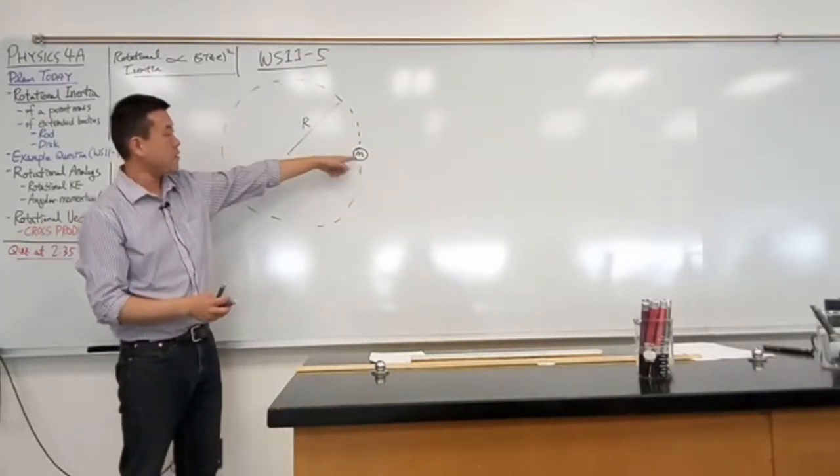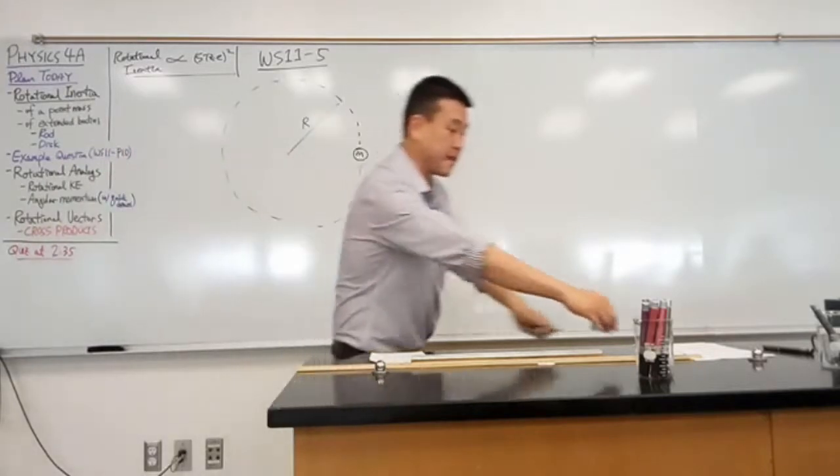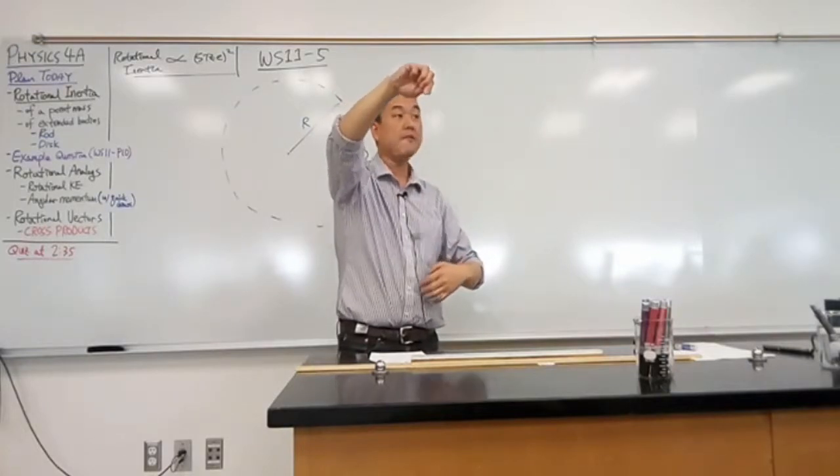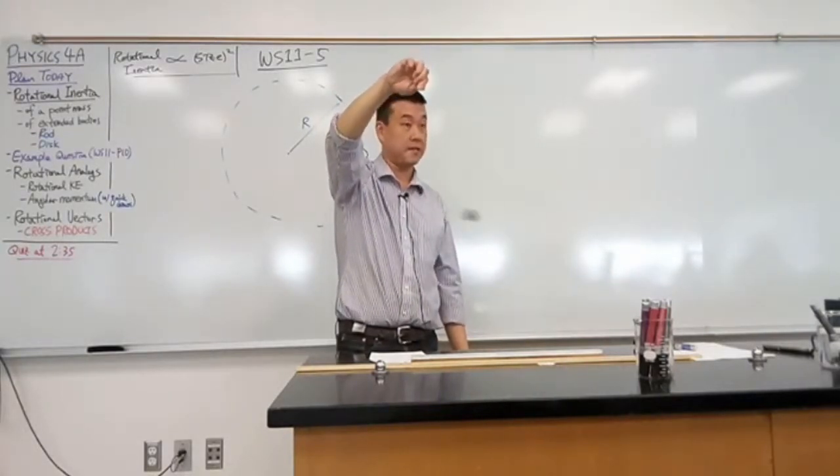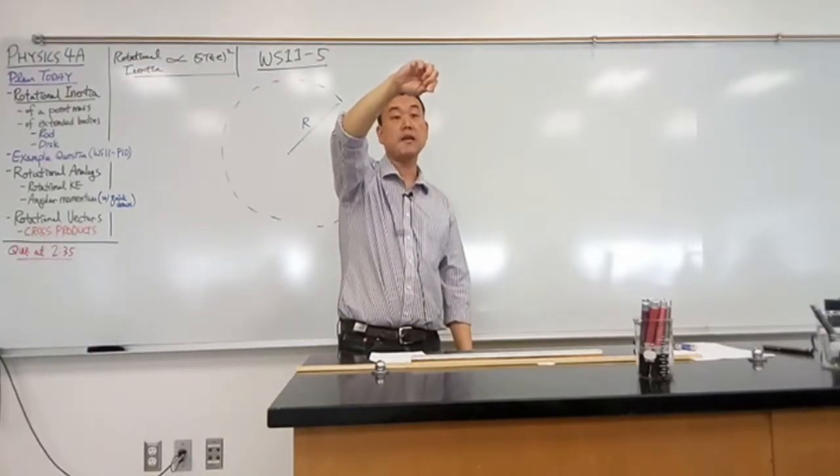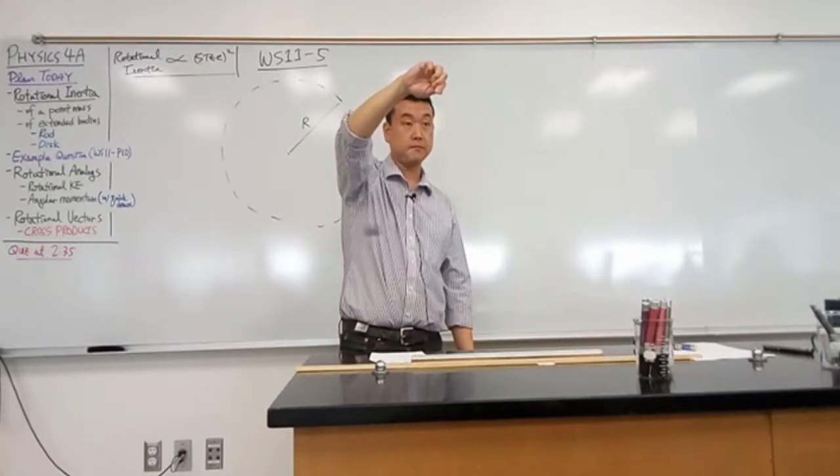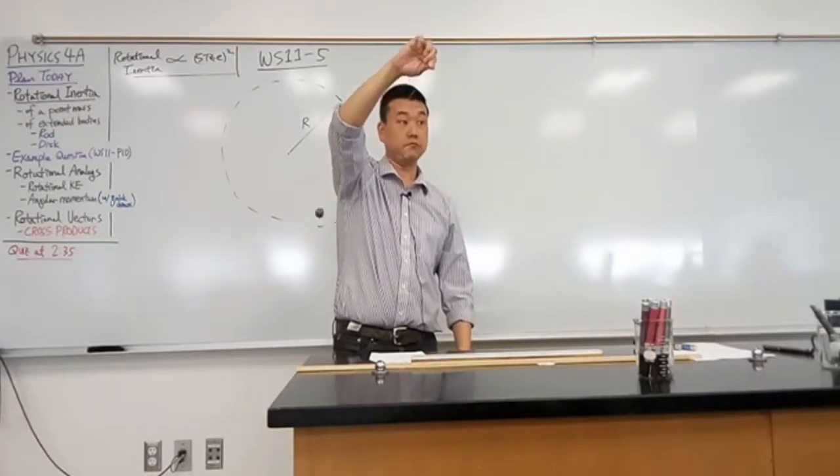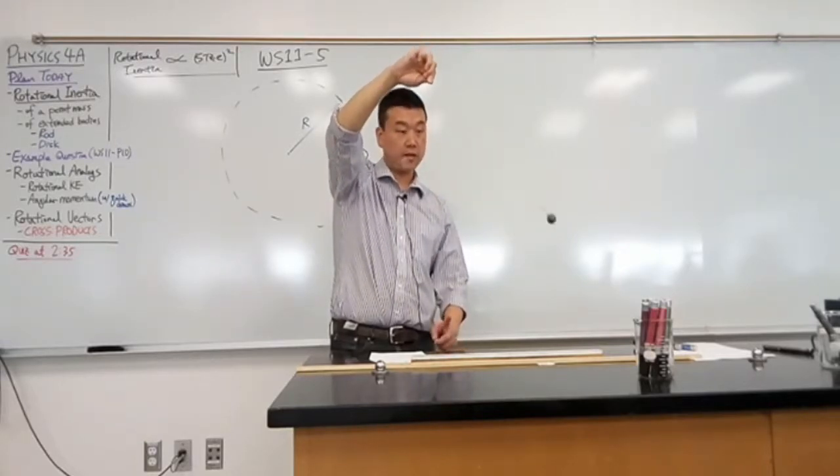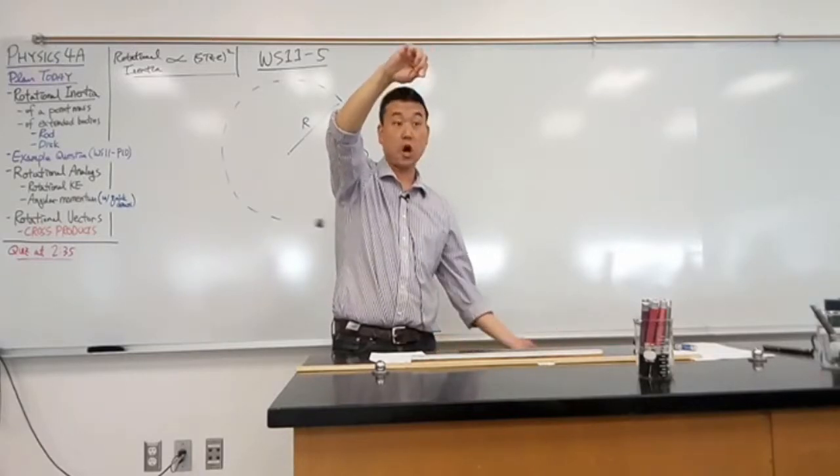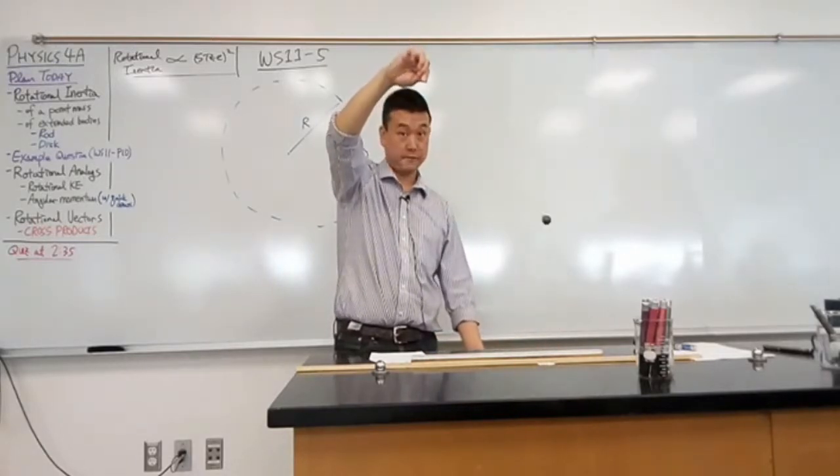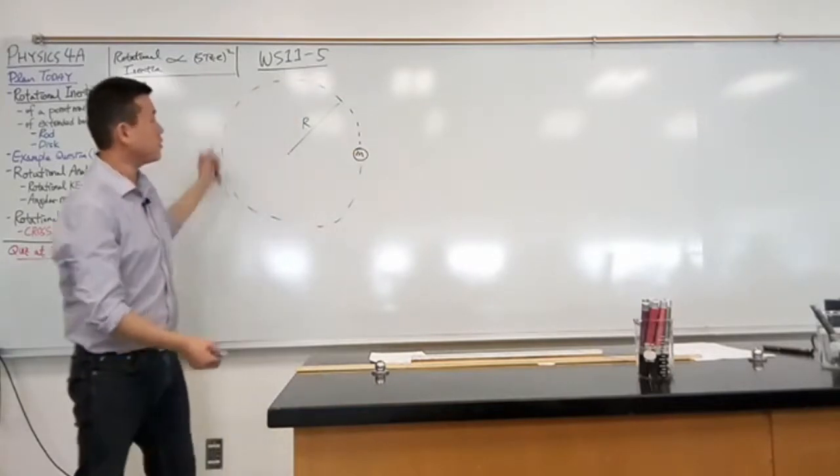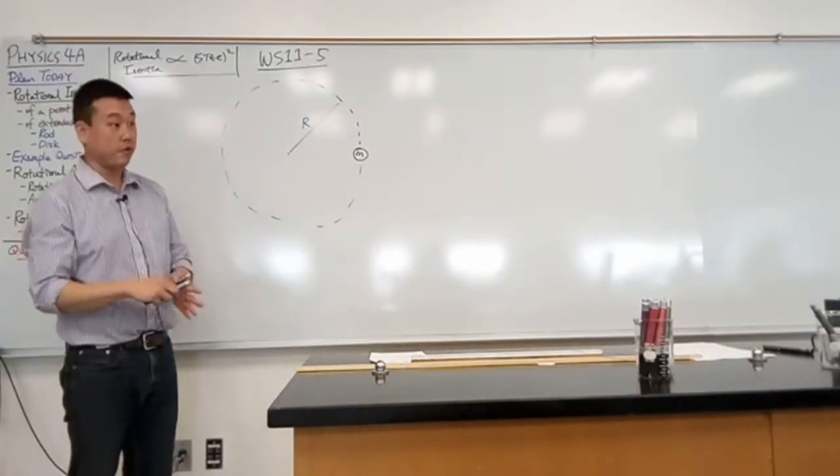So something will cause this mass to follow this circular path. In the example that you have seen before of conical pendulum, that something will be string. But whatever it is, I don't really care what that something is that's keeping it in a circle. Because right now, would you say that this tension is providing any torque on this mass? About an axis that's going through my hand, vertical axis? Is it providing any torque? No, right? Because you see that because it's rotating at a constant rate. So nothing is causing it to change its rotational state.